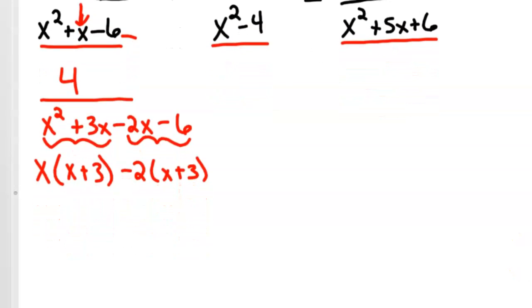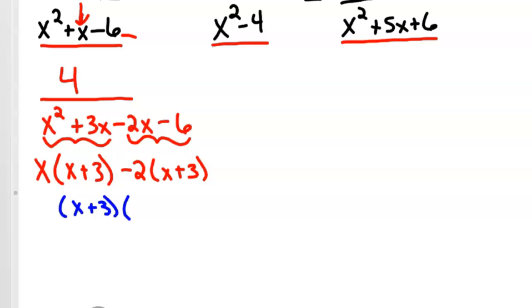If you take an x out, you're left with x plus 3. If you take out a negative 2, you're left with also x plus 3, which means we can factor it again. We have a greatest common factor of x plus 3. I'm going to slide this down since we don't really need the rest at the top for a minute.